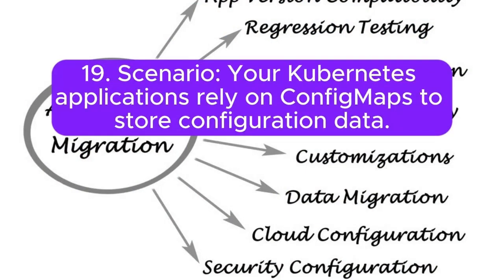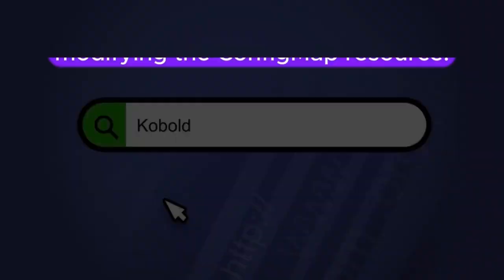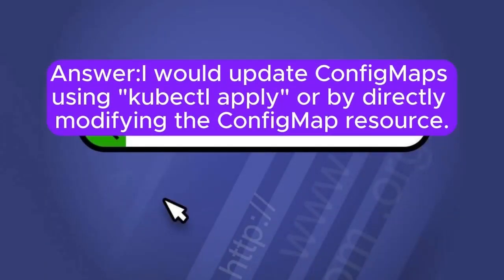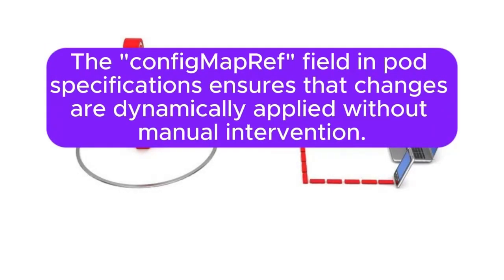Scenario 19: Your Kubernetes applications rely on ConfigMaps to store configuration data. How would you dynamically update ConfigMaps, and how would you ensure that pods automatically reflect the changes without requiring restarts? Answer: I will update ConfigMaps using kubectl apply or by directly modifying the ConfigMap resource. Pods using ConfigMaps would automatically reflect the changes without restarts, as Kubernetes volume mounts automatically update. The configmap reference field in pod specifications ensures that changes are dynamically applied without manual intervention.